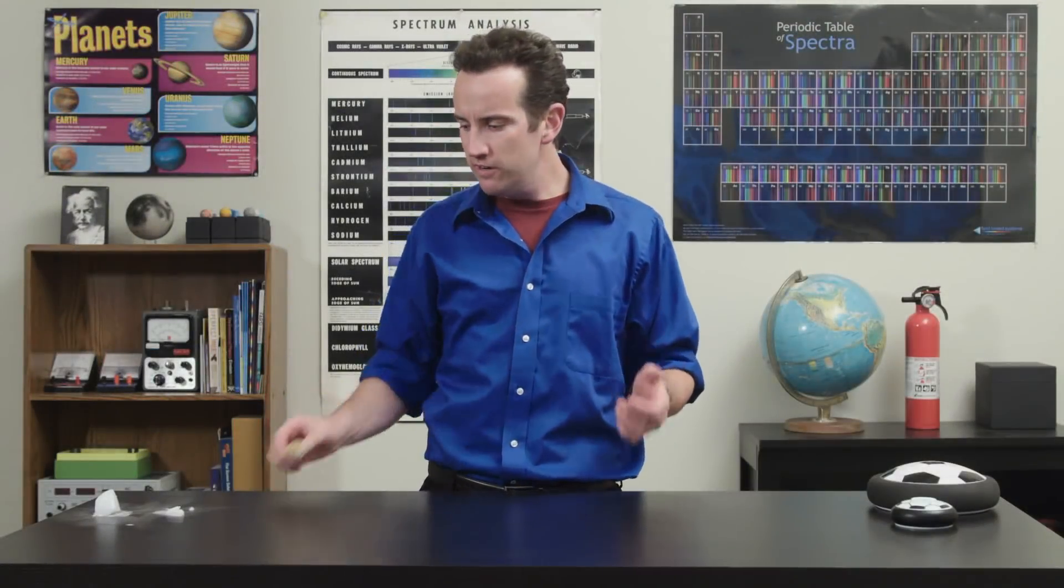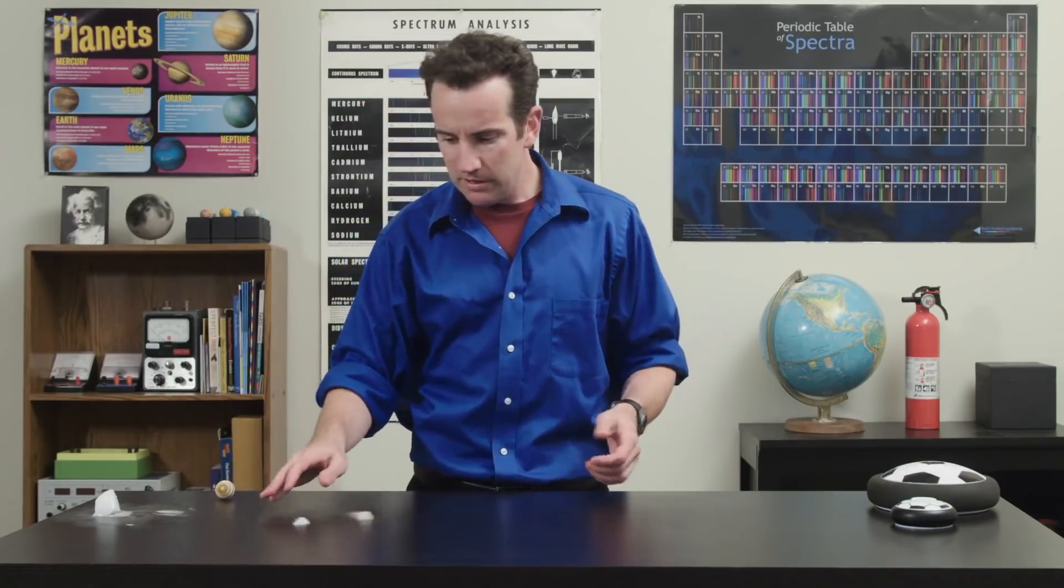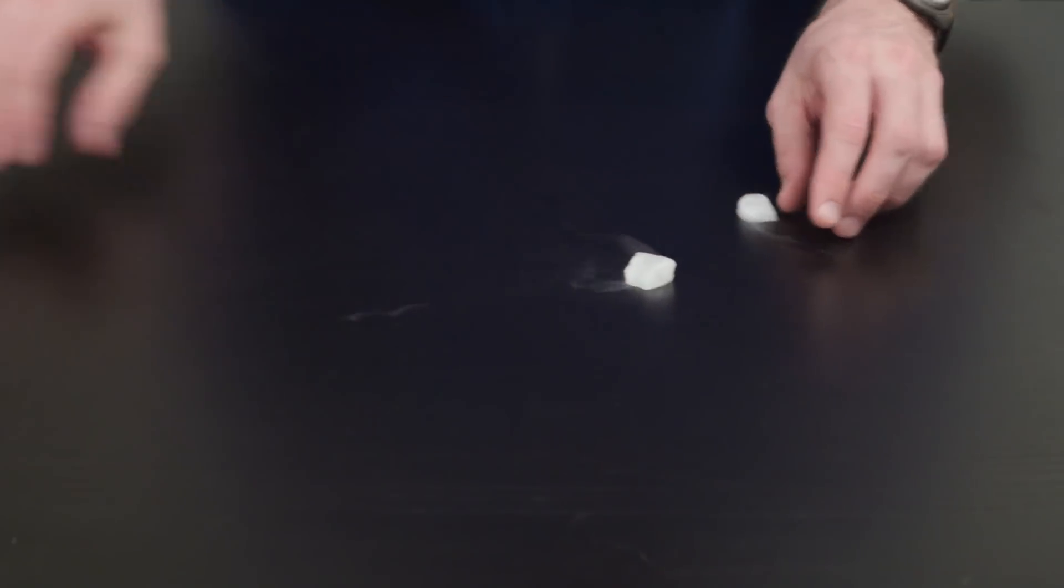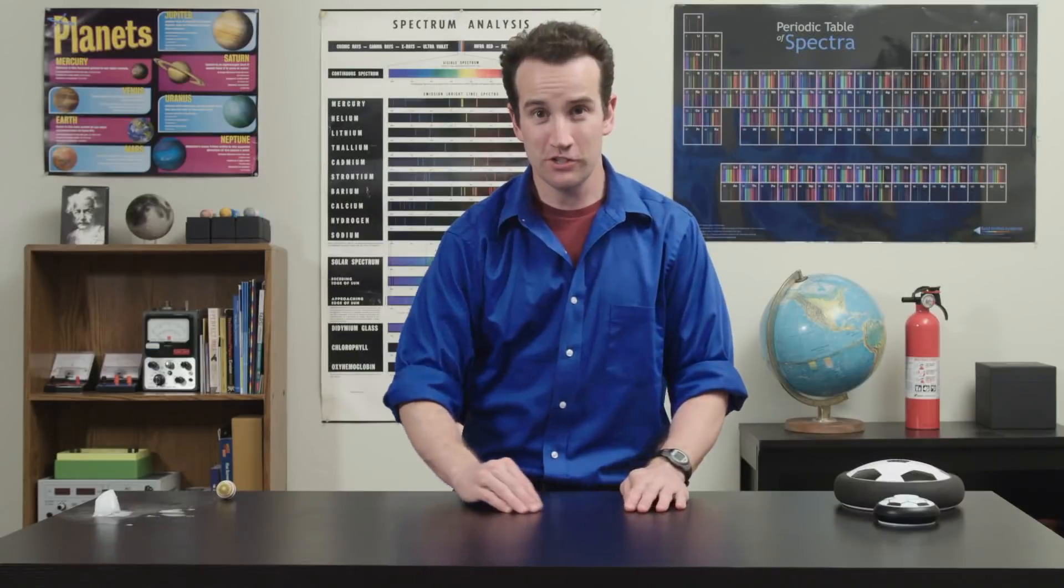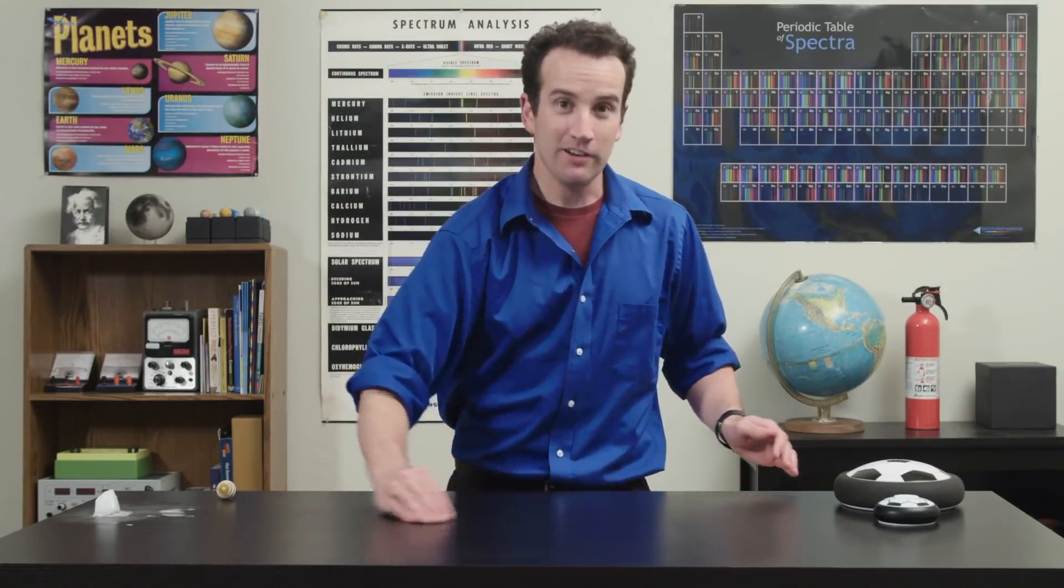Now, we rarely see this on earth because there's always friction acting on the objects, but there are some circumstances in which we can remove friction. One of these situations is dry ice, and another is floating air hockey pucks.